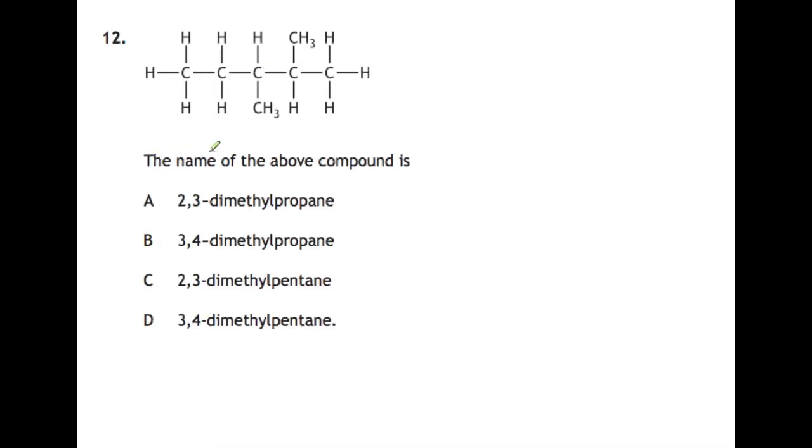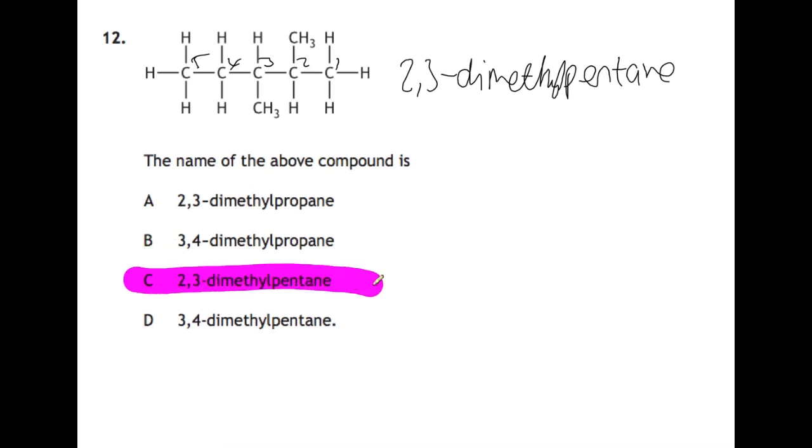Question twelve: the name of the above compound is what? For this, you're best to just go along and name it as you would usually. So find the longest chain, and number from the end closest to our branch. So we've got 1, 2, 3, 4, 5. So the base of this name is pentane. On 2 and 3, we have methyl groups, and we have 2 of them. So we have 2,3-dimethyl pentane. And then you just need to check the names and find that. So that's C.